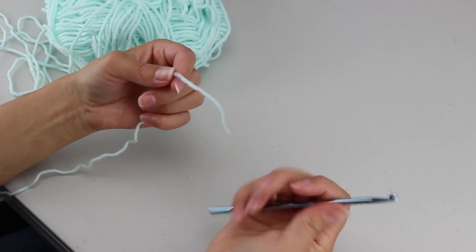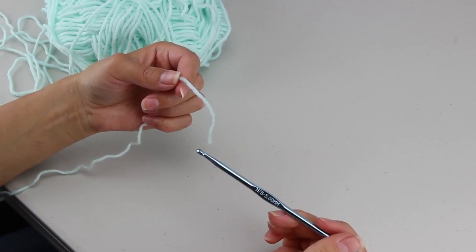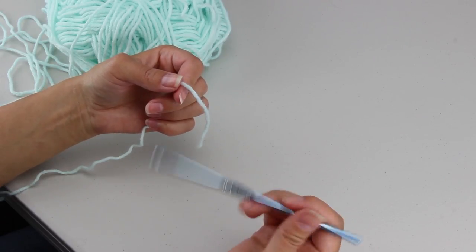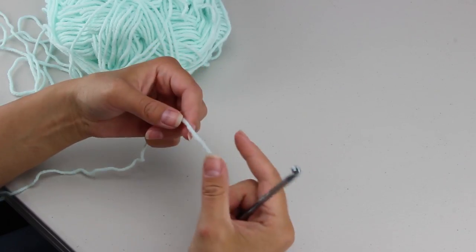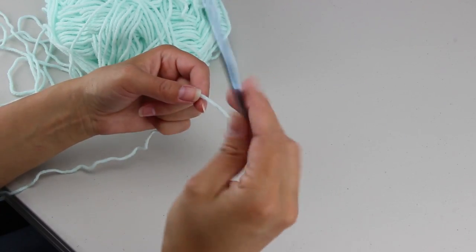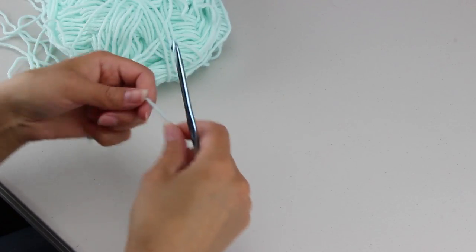To begin our project we're either going to start with a magic ring and working 5 single crochets inside of it or if you're uncomfortable with the magic ring or you prefer to use chains you can chain 2 and work 5 into the second chain from your hook. 5 single crochets into the hook.